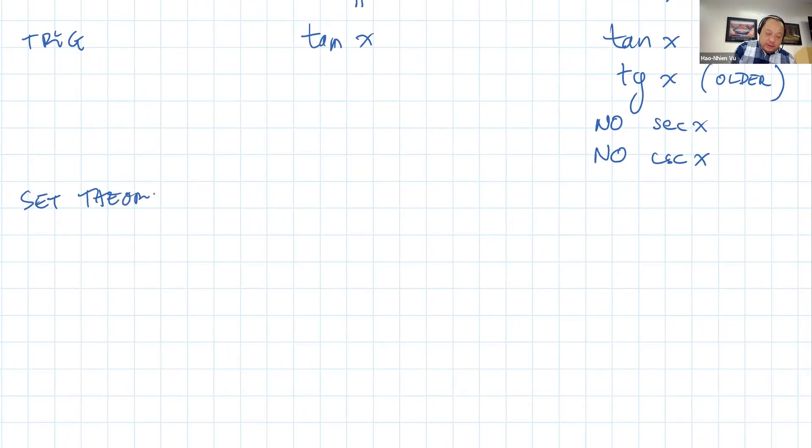Set theory. Some slight differences. Set builder notation. We write {all x | such that certain property}. Vietnamese use a slanted line instead of straight line. {all x / such that property}.